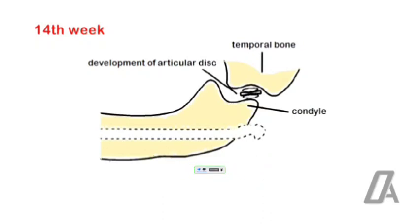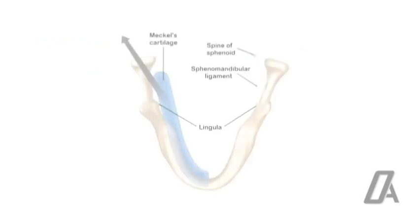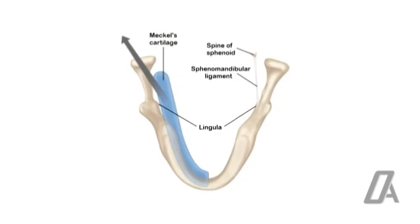The coronoid process develops from secondary cartilage that arises at about the tenth to fourteenth week in utero. The ossification center is at the site of future Meckel's cartilage, one on either side. Ossification proceeds anteriorly and posteriorly from here, and stops at the site of the future lingula.